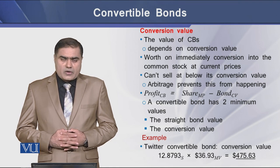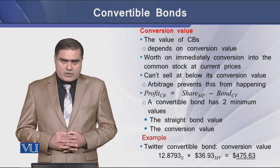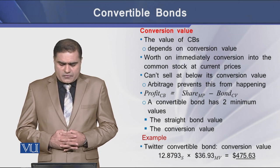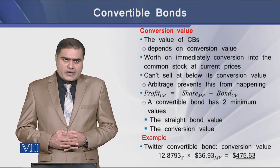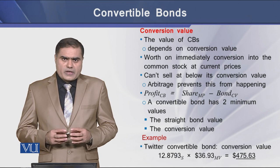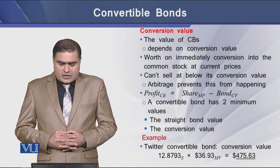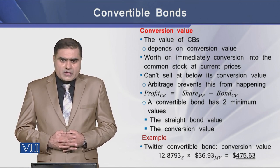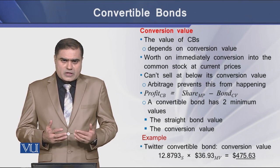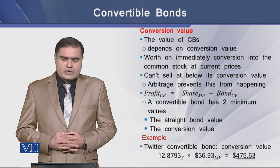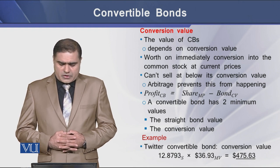A convertible bond has two minimum values: the first is the straight bond value and the second is the conversion value. For example, the conversion value of Tutor's convertible bond is $475.63 per share.